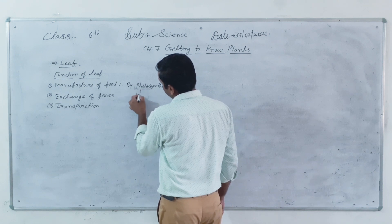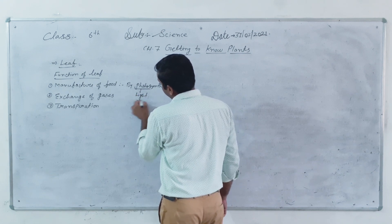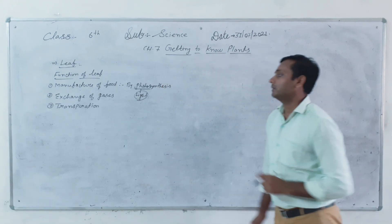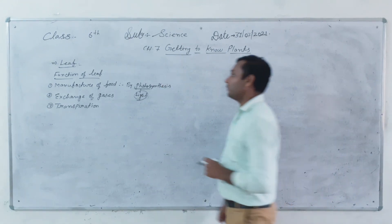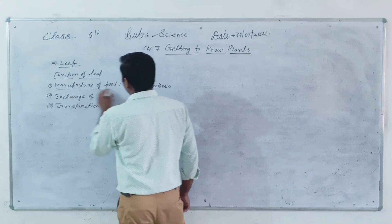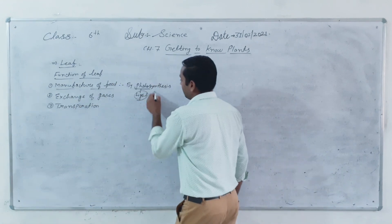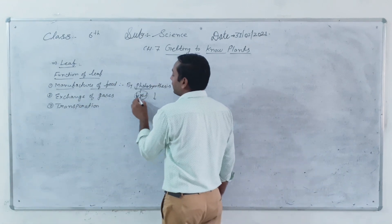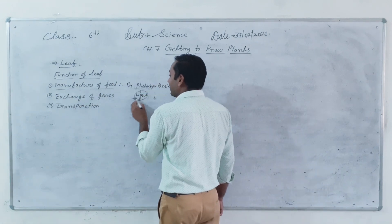Photo means light, synthesis means prepared — so in light, food is prepared. For the photosynthesis process, light is essential.